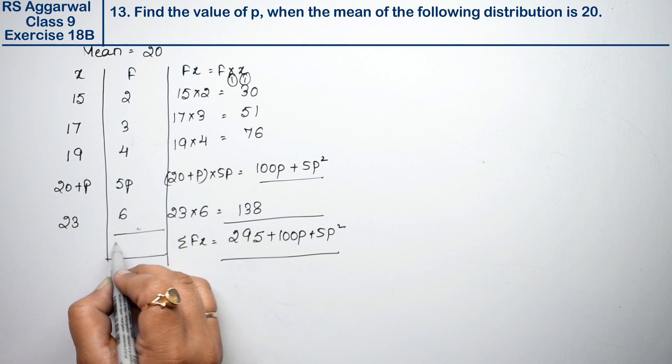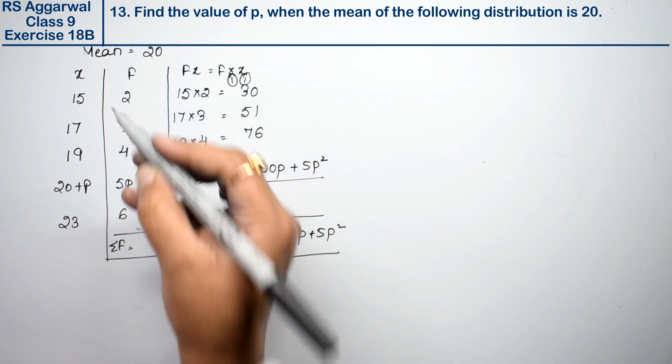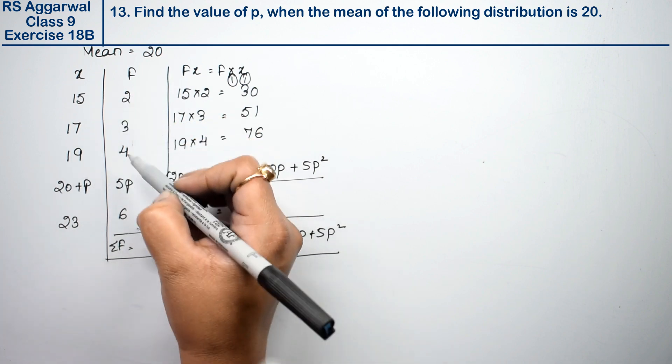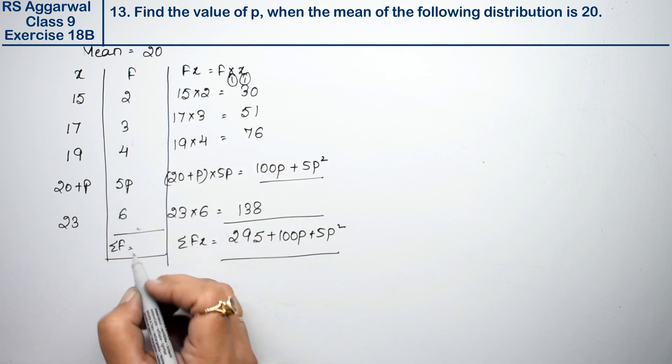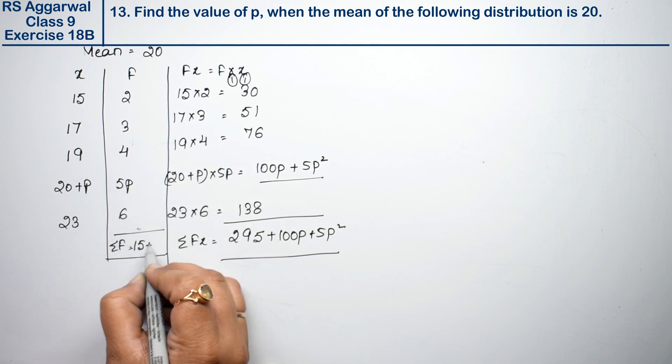Sigma f equals 2 plus 3 is 5, plus 4 is 9, plus 6 is 15, plus 5p. So sigma f equals 15 plus 5p.